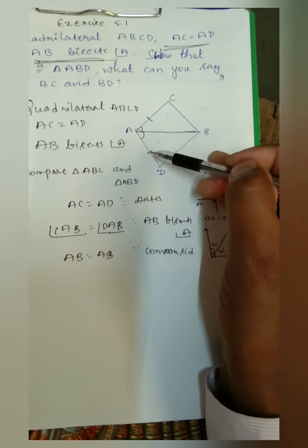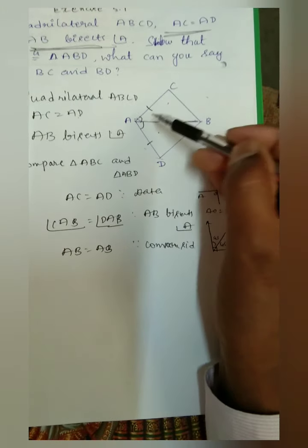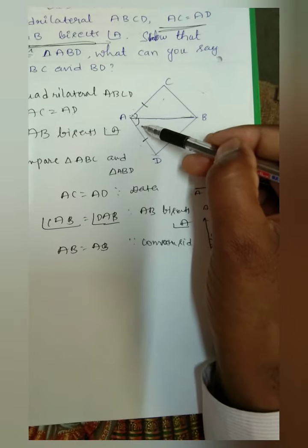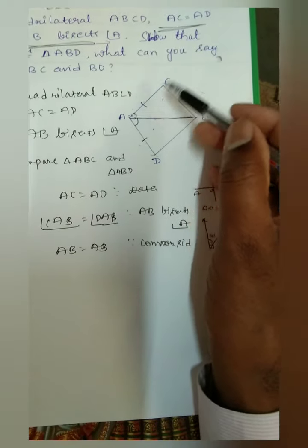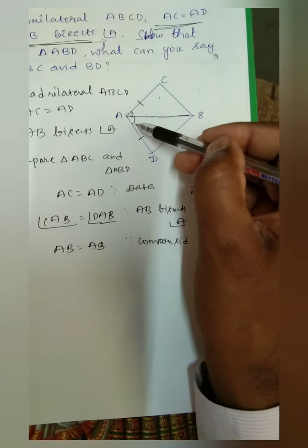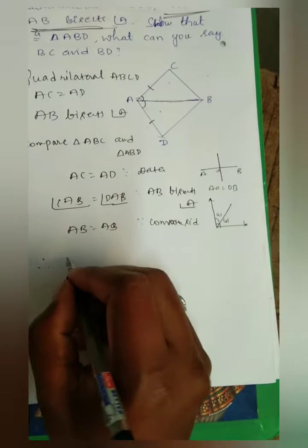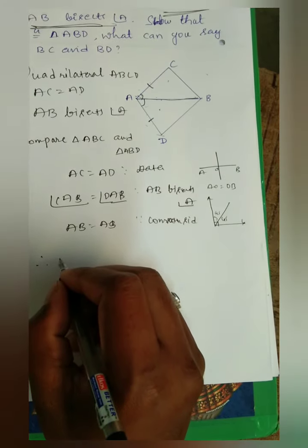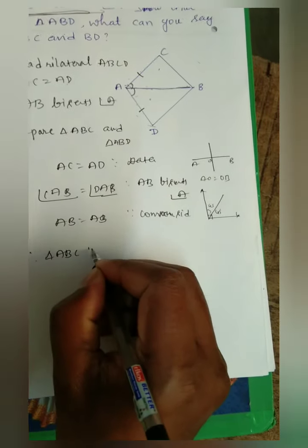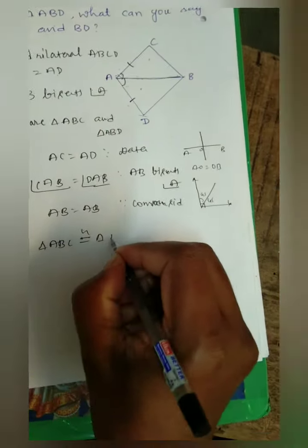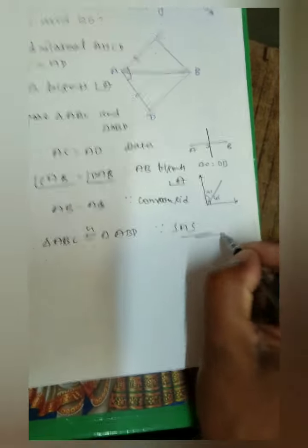AC corresponds to AD and is equal. AB is common to both triangles. Angle CAB corresponds to angle DAB and is equal. Two sides and the included angle of one triangle correspond to two sides and the included angle of the other. Therefore, according to the Side-Angle-Side congruence rule, triangle ABC is congruent to triangle ABD.